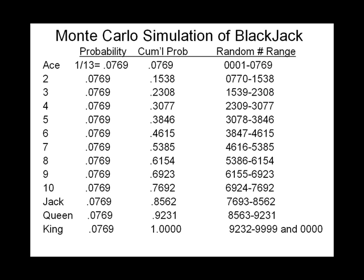Next, I'd like to talk about a Monte Carlo simulation — a manual simulation of the game of blackjack. In a game of blackjack, you don't really care about the suit of cards; all you care about is what card it is. So you have aces through kings. The probability of each card is the same: 1 over 13, or 0.0769 for each card — they're all equally likely. In the third column, we have the cumulative probabilities, and we use those cumulative probabilities to come up with random number ranges. The first random number range is 0.001 through 0.0769, and that 0.1538 cumulative probability for two comes in handy to define the random number range for two. By the way, this technique was developed during the Manhattan Project by von Neumann up in Los Alamos.